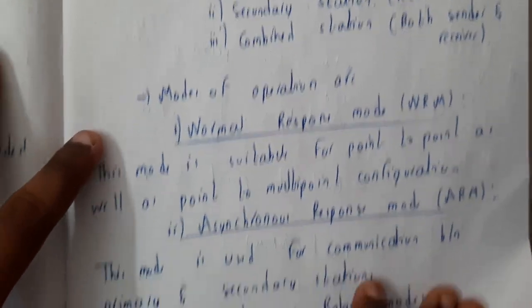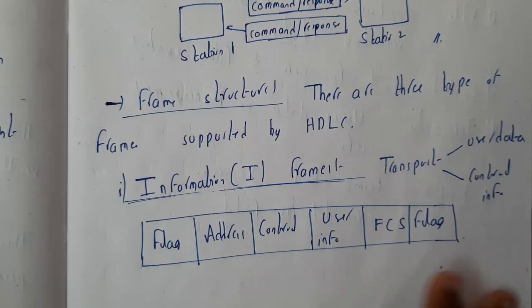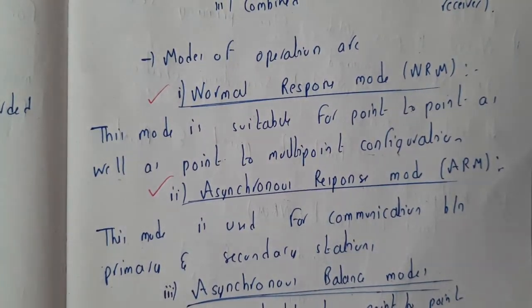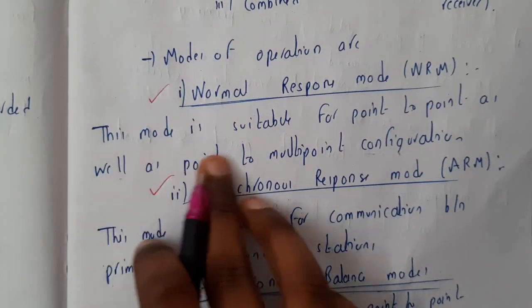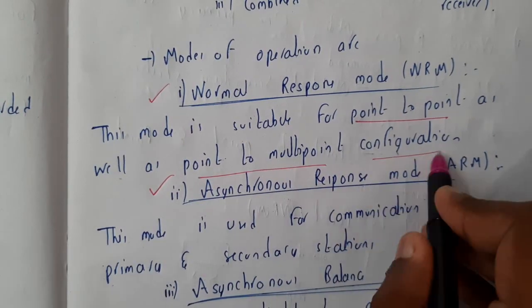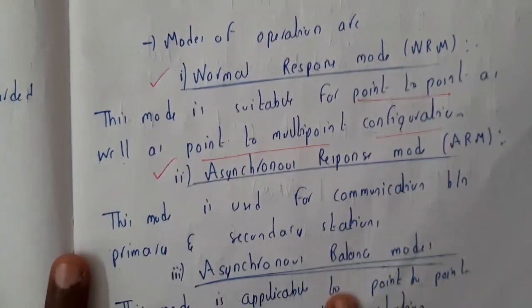Among these three, the two most important modes are normal response and asynchronous. We'll go through an in-depth discussion. This mode is suitable for point-to-point as well as point-to-multipoint configuration, so we can use it for both.